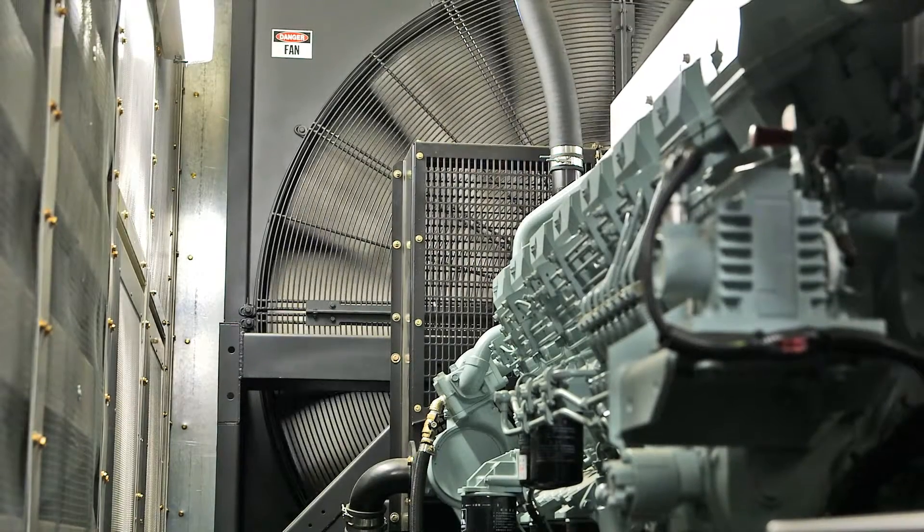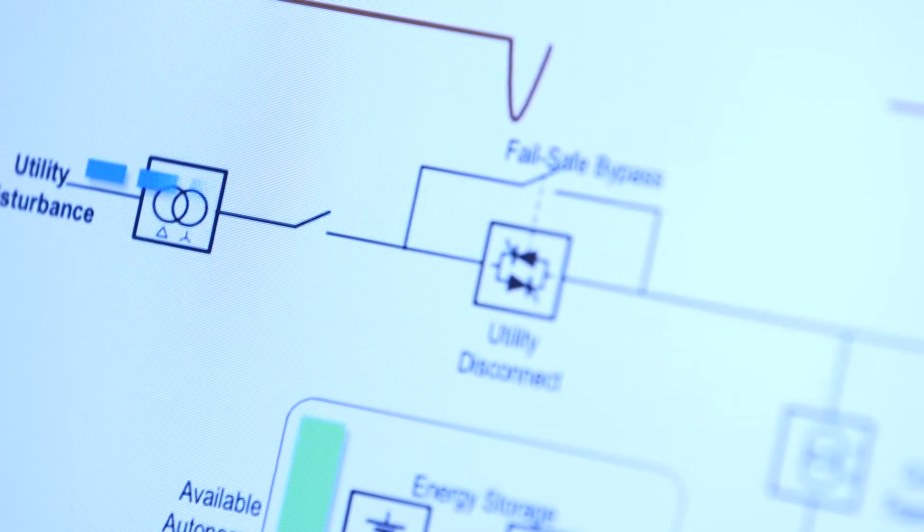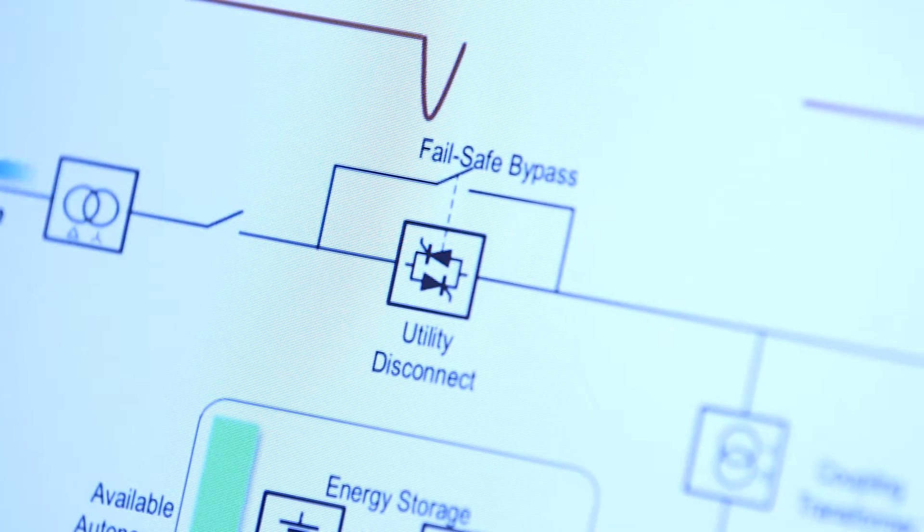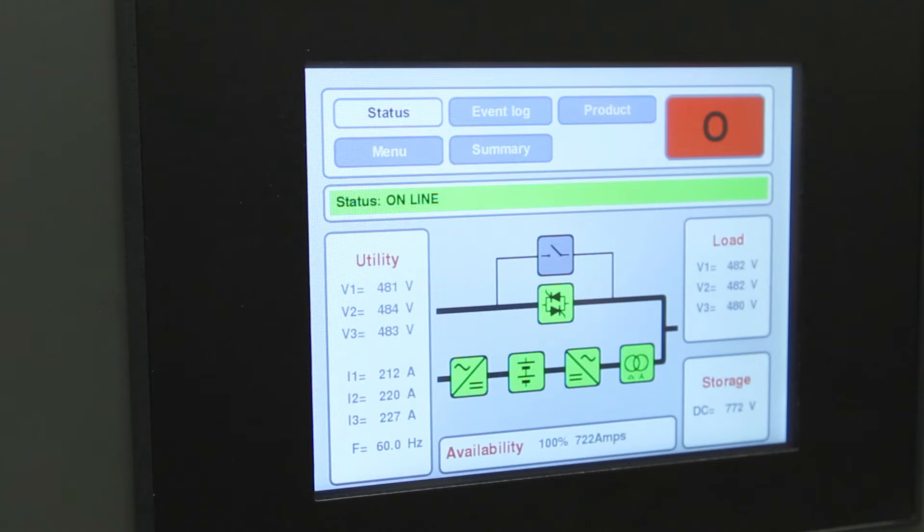The unit handles synchronizing with the generator as well as the synchronizing and reconnection to the utility when the voltage has returned to a normal condition. ABB's PCS100 UPS-I allowed T&B to meet the efficiency targets without any compromise in system reliability or performance.